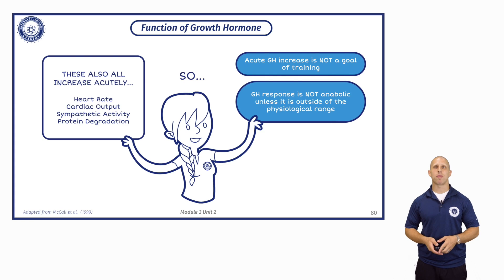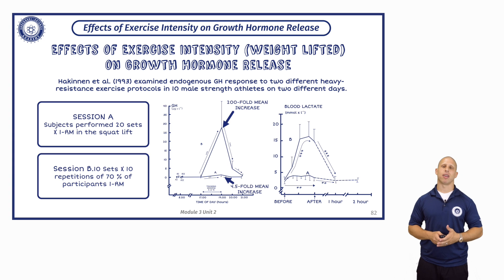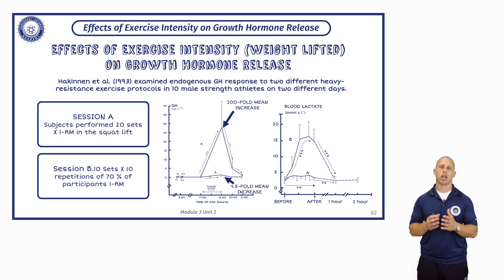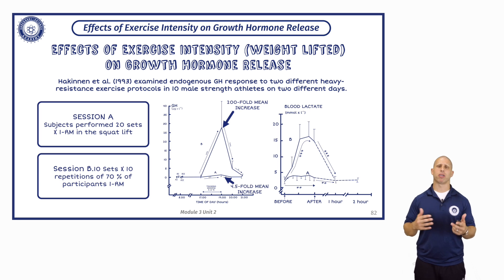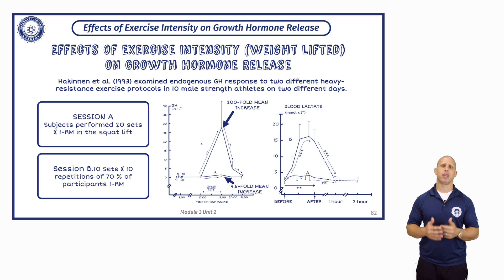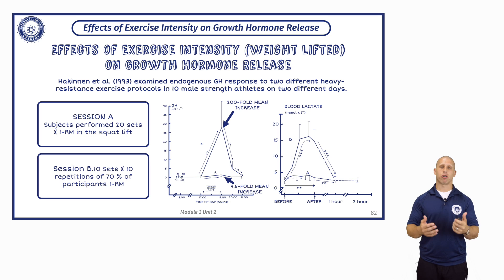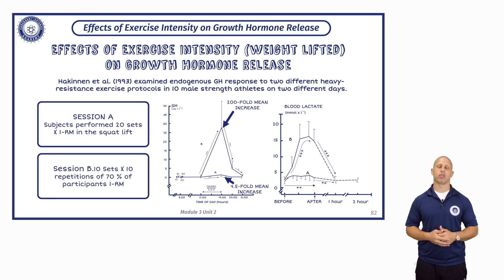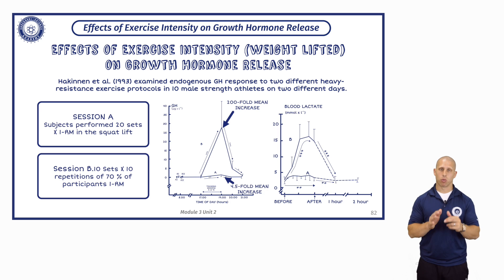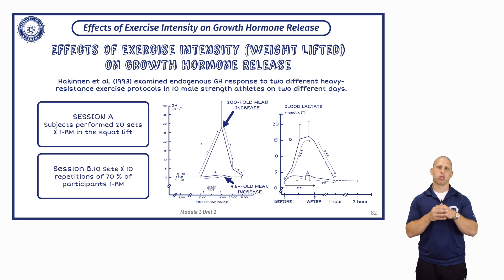We see the same thing when we look at this study, but now we start to understand what type of training increases GH and why these recommendations have been made. Specifically, the recommendations to increase GH have been: moderate to high repetitions with short rest intervals. That's also what you've been taught to increase skeletal muscle hypertrophy — moderate to high repetitions with short rest intervals.